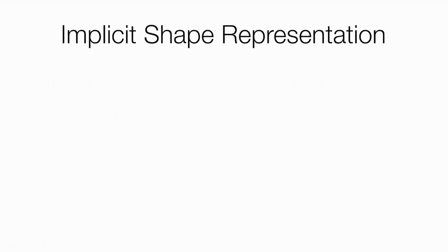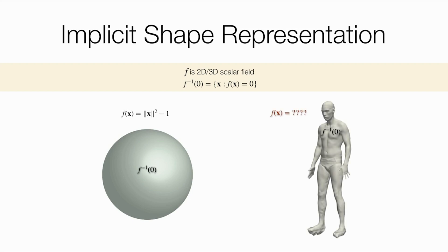One way to represent 2D or 3D shapes is implicitly as a zero-level set of a scalar function. Implicit representations for simple shapes like spheres are well-known, but how do we represent complicated shapes as zero-level sets?